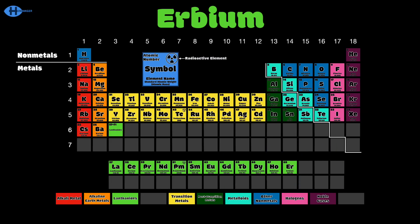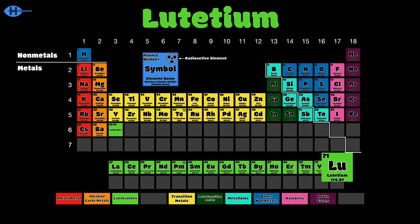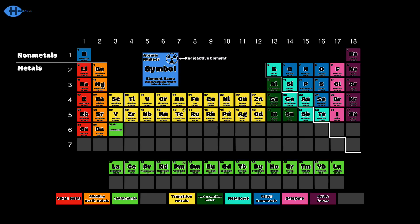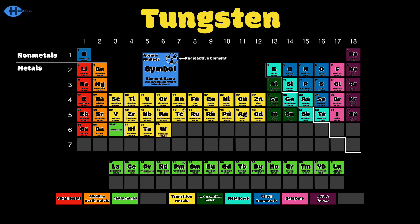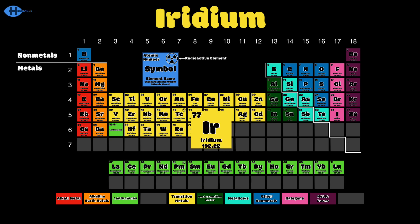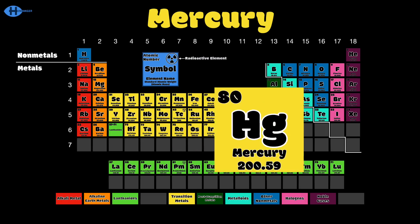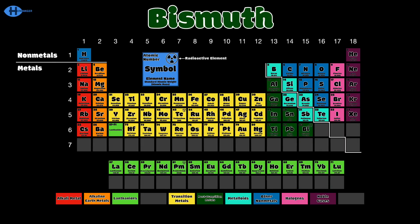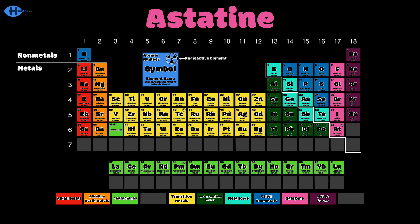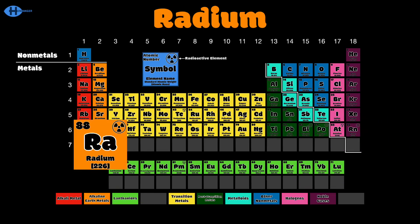And also erbium, thulium, ytterbium, lutetium — that's the end of the lanthanides. Then hafnium, tantalum, tungsten, rhenium, osmium, iridium, platinum, and gold, mercury, thallium, lead, and bismuth, polonium, astatine — radon's not a myth, francium and radium.